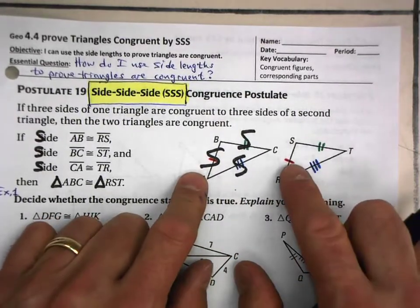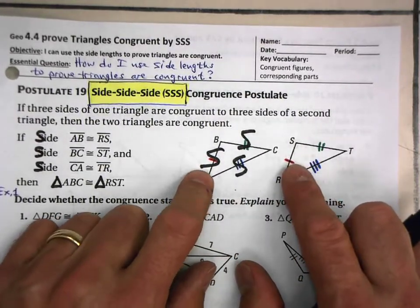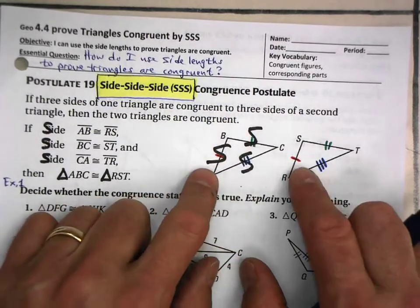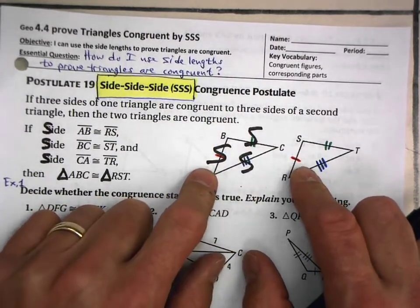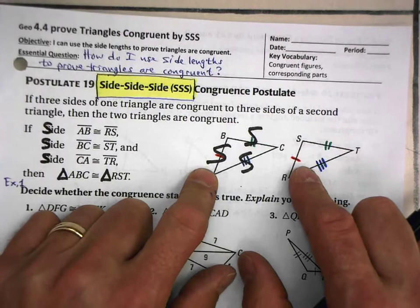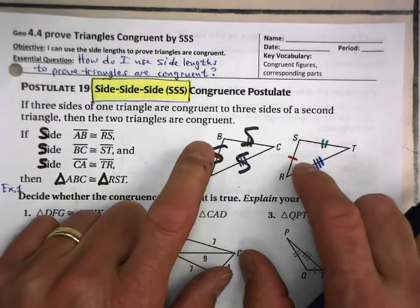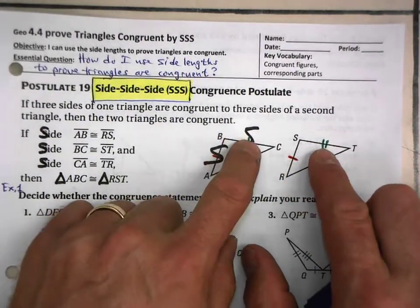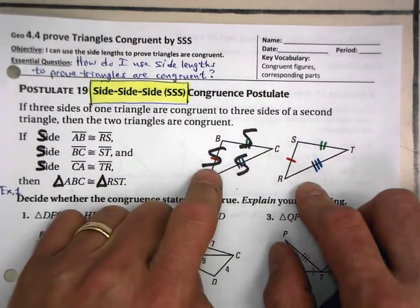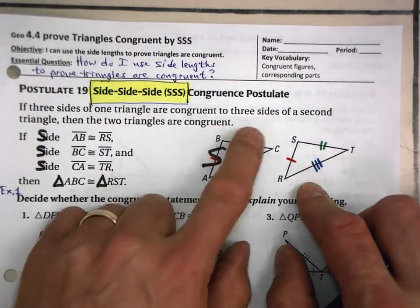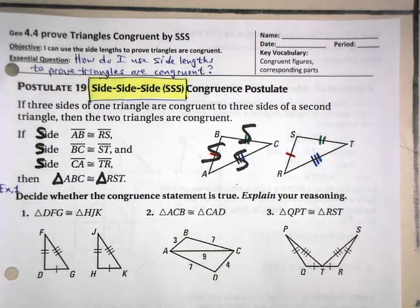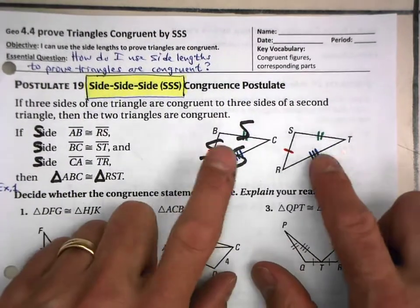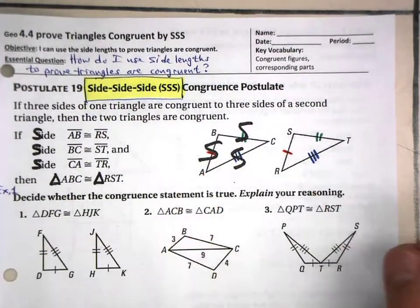So again, notice how I am just labeling one of the triangles here with the pairs of things that I have that are congruent. So I have one pair, another pair, and a third pair of sides that are congruent. So I have here S, S, S, and that is sufficient to prove that these two triangles are congruent.